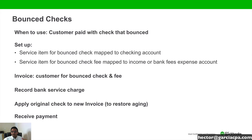Then we're going to create an invoice for the customer using the bounce check item and the fee. We're going to record the bank service charge — the actual money that was charged by the bank — in the register. Then we're going to go back and apply that check, the original payment that bounced, to the new invoice to restore the original invoice that was created from the bounce payment. And then we're going to receive a payment to match up that invoice.